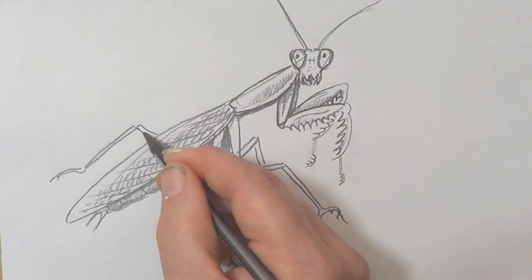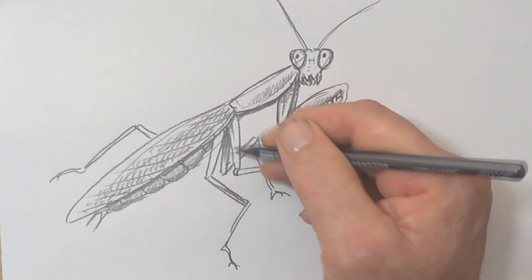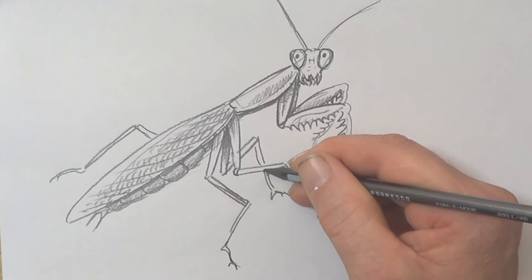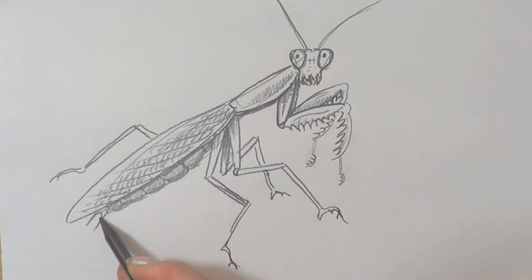This here looks a bit light. So I'm going to just darken that bit. Darken that. Make it look like it's from behind. Just putting the pencil to the side, sideways, very, very gentle. And give it a bit of shade under here.